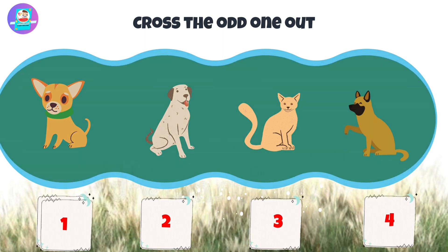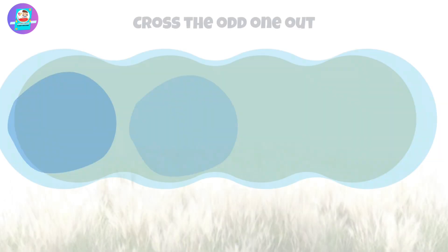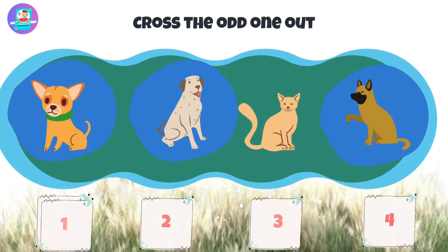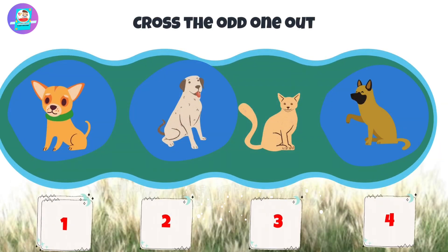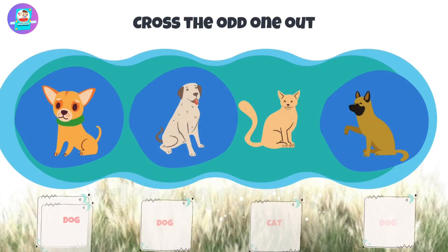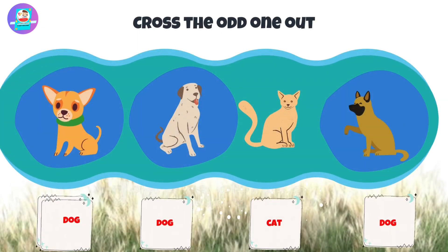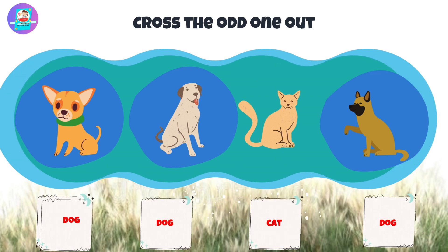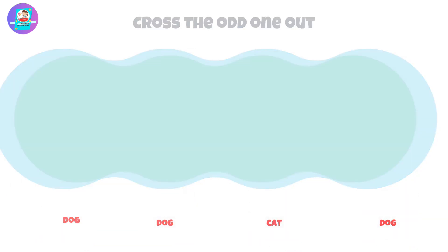Okay, let's check first. When we see here we have 3 dogs and 1 cat. There is a cat that is odd. So put a cross on this cat.